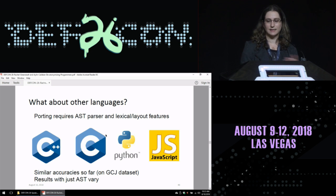So what about other languages? Basically porting this to a new language requires an AST parser which exists for almost everything and lexical and layout features that you choose for the language. So far we've done things for C++, C, Python, and JavaScript. We get similar accuracy so far on the Google Code Jam dataset. The results with just using the AST tend to vary more, which is kind of interesting.